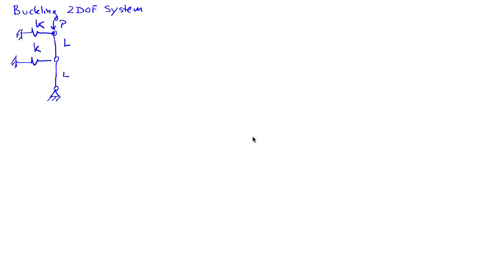In this example, I'd like to look at the buckling of a two-degree-of-freedom system that's composed of two rigid rods of length L and supported laterally by two springs, each of spring constant K at these two joints.